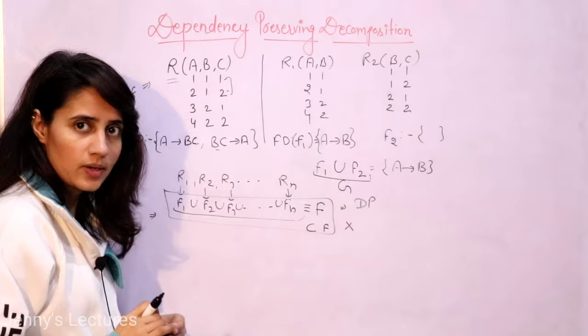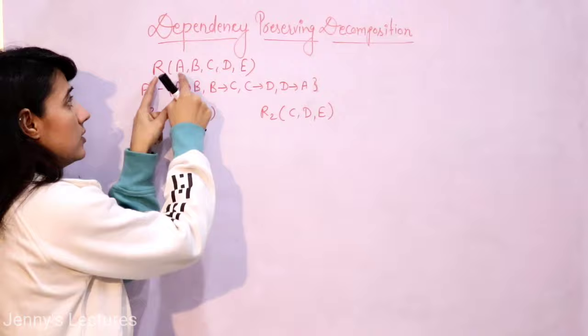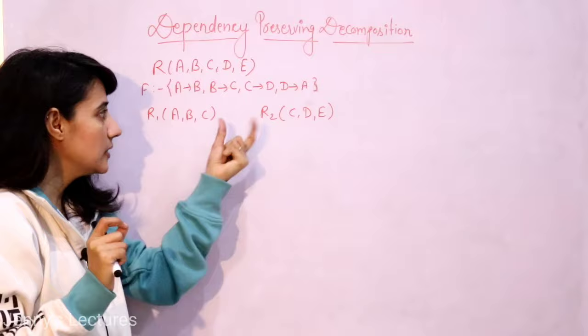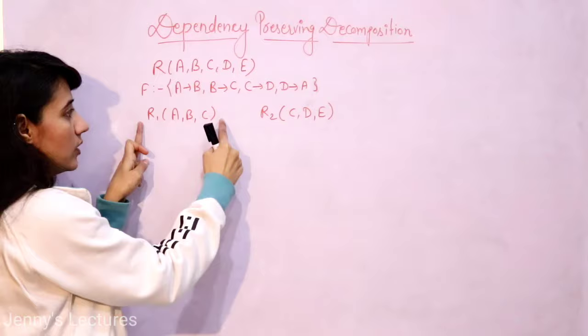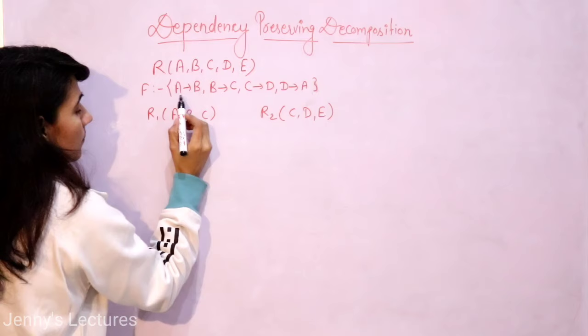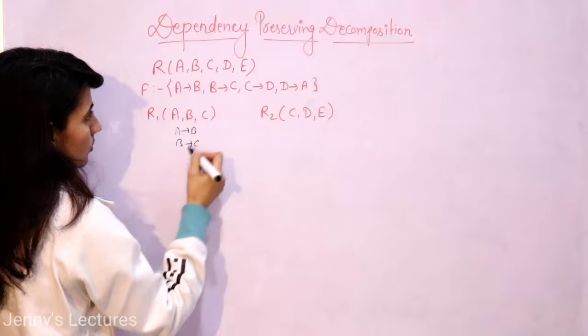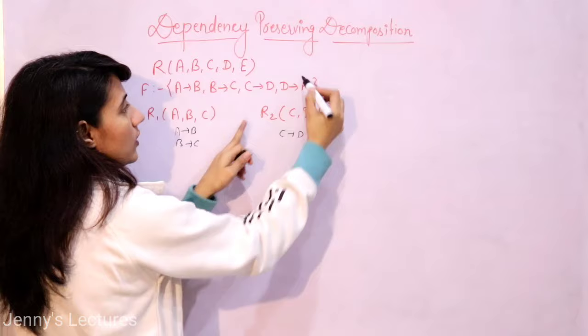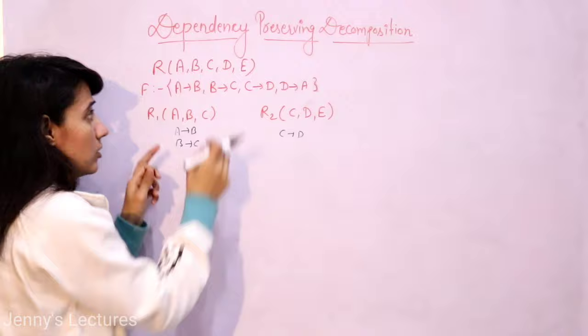Let us take one more example. Here is a relation with certain attributes and functional dependencies. Suppose I have divided this relation into R1 and R2. You have to check: is this decomposition dependency preserving or not? The first step is to find out the functional dependency set of these sub-relations. The proper process is not to directly look at the FDs and assign them — rather, find out the closure of all attributes in each sub-relation.